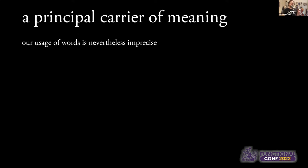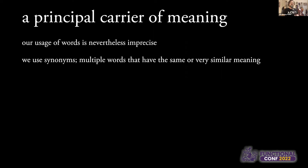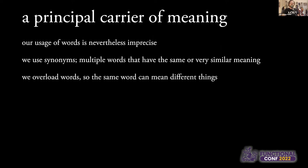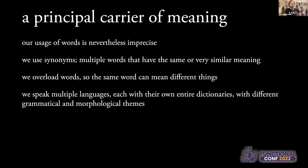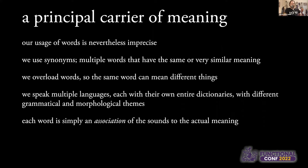But our usage of words is nevertheless very imprecise. We use synonyms, so we have multiple words that are essentially referring to the same thing. And we overload words, so the same word can mean different things — maybe in different contexts. We also speak multiple languages, and each language has its entire own dictionary, usually with a complete set of different words to mean the same things, and entirely often different grammatical and morphological themes. Ultimately, all these words are is just an association of sounds to the actual meaning.